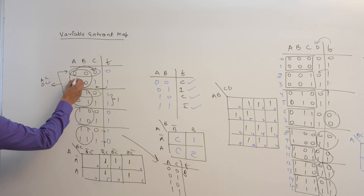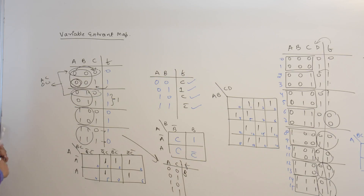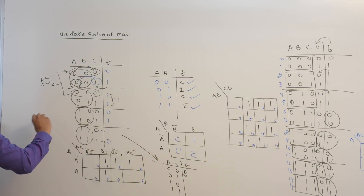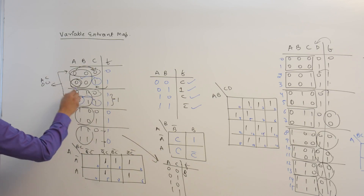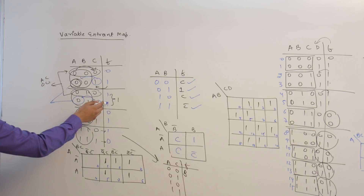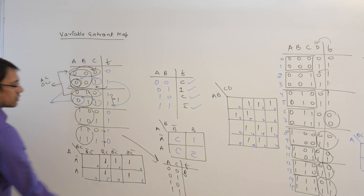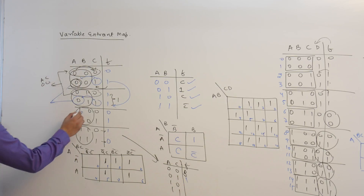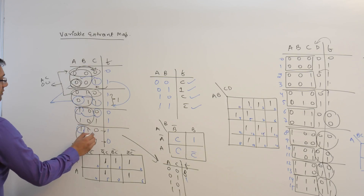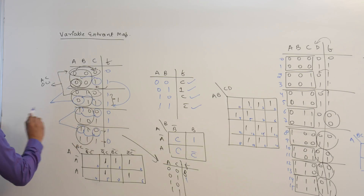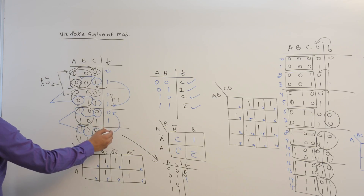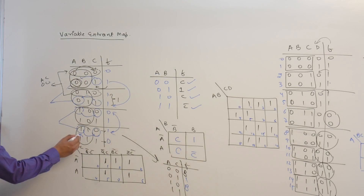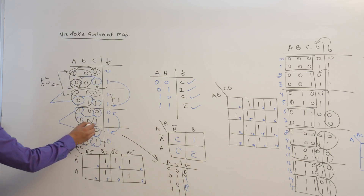When A is 0 and C is 1, the function F gives only 1 in both relevant cases, so we write 1. When A is 1 and C is 0, the function F gives exactly the value of B in both cases, so we write B.